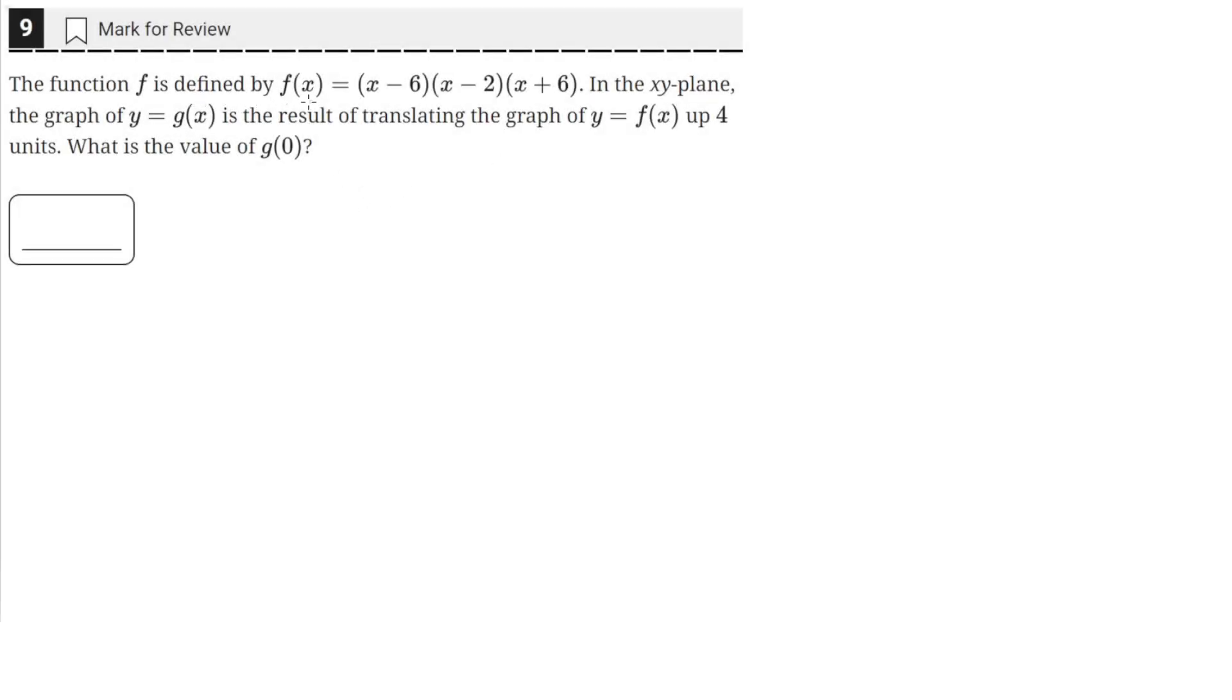The function f is defined by f(x) equals this quantity here in the xy plane. The graph of y equals g(x), so a different function, is the result of translating the graph of y equals f(x) up 4 units. What is the value of g(0)?